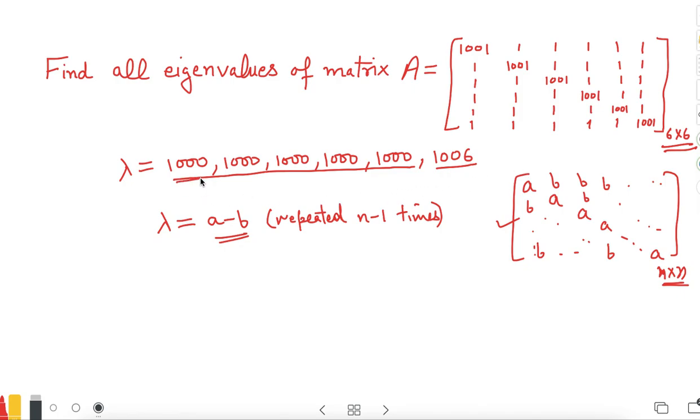For example, in this case we are working with a 6 by 6 matrix, so our eigenvalue A minus B will be repeated 5 times.